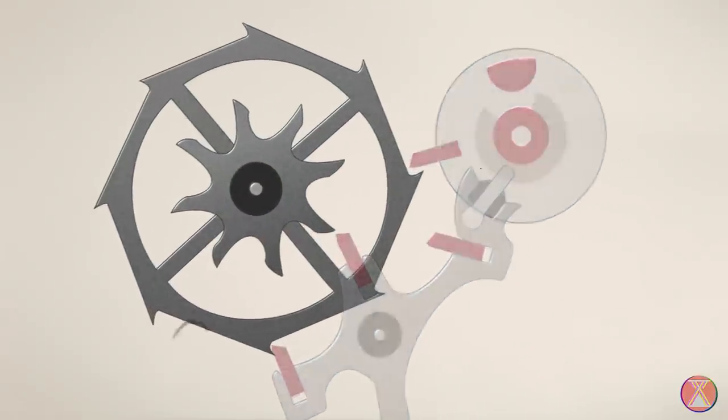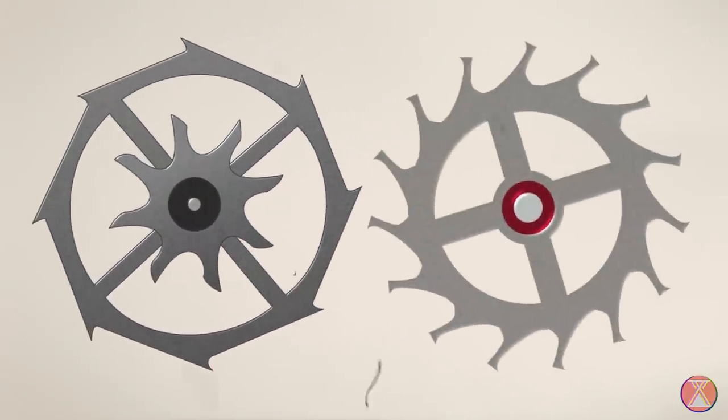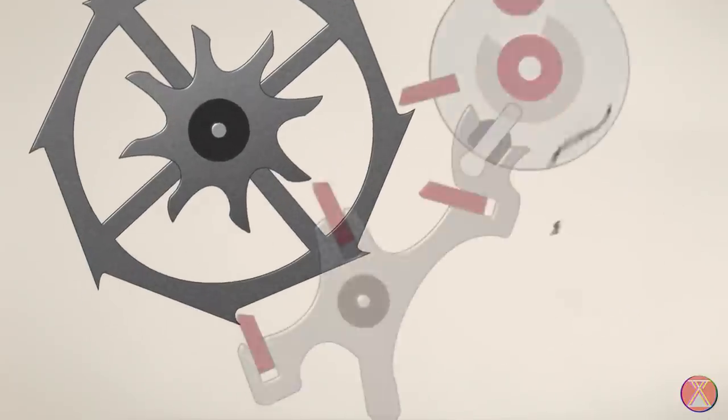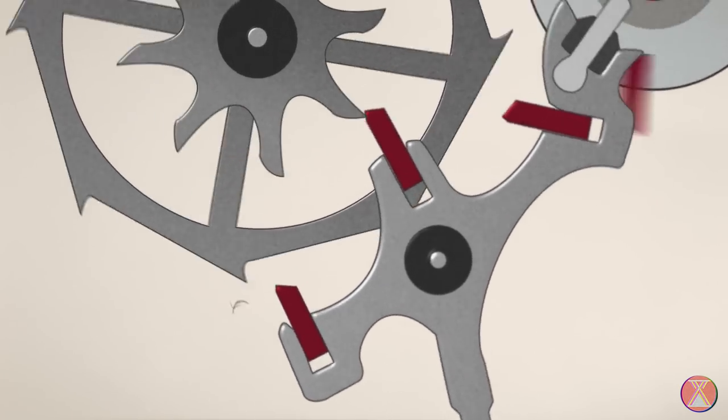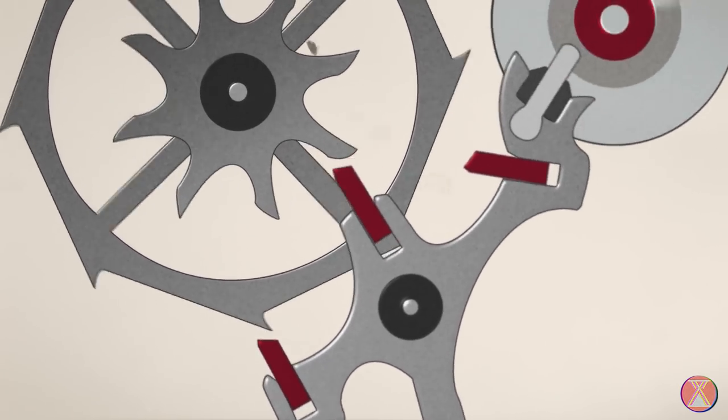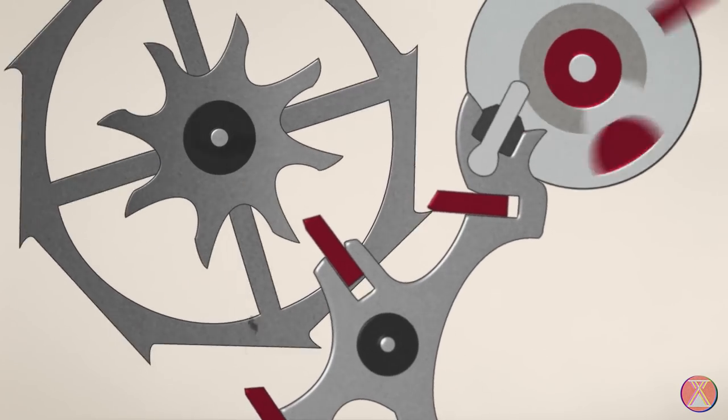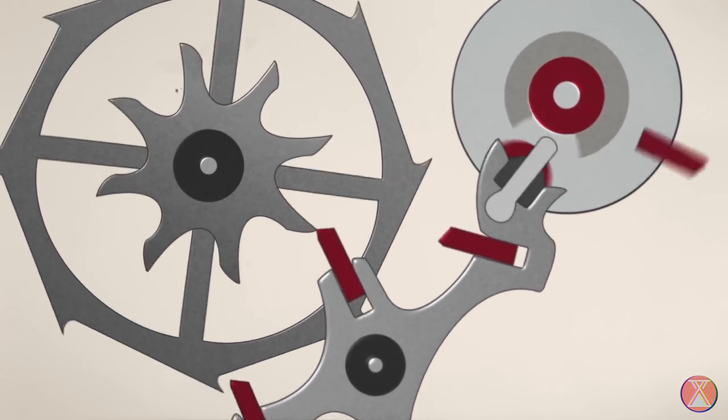Now, one thing to notice is the teeth on your coaxial wheel are shaped differently than those of your Swiss lever's escape wheel. They come to a point. This point then delivers the impulse to the side of the pallet stone in a pushing motion as opposed to the sliding motion of your Swiss lever. This change eliminates the sliding friction in the system.